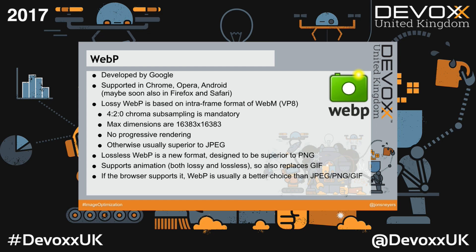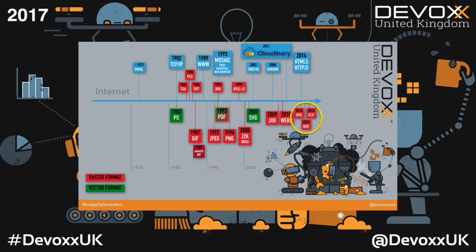Then there's WebP, a really interesting format developed by Google, based on the WebM video codec (VP8). It is usually superior to JPEG in terms of compression quality, and is a highly recommended format. It comes in two variants: a lossy variant that improves upon JPEG and adds transparency support, and a lossless variant that replaces PNG and tends to be superior to it. It also supports animation, so it can replace GIF as well.